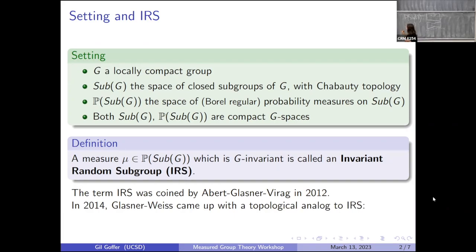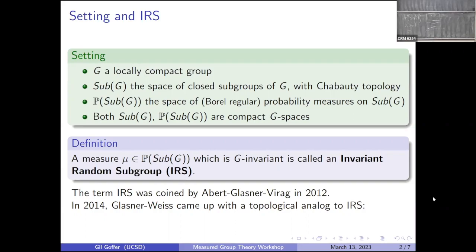Two years later, Glasner and Weiss came up with a topological analogue to IRSs. This Glasner should not be confused with the other Glasner — this is Yair Glasner the son, now already a father, and that's Elie Glasner. So Elie Glasner is now the grandfather, Yair Glasner is the father, and their son is now a PhD student. Anyway, I put these two dots so we are all excited to see what's coming next.